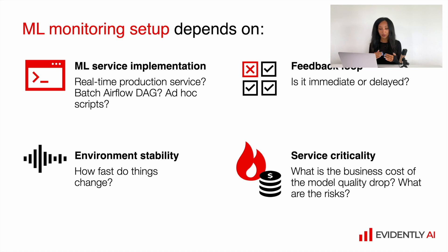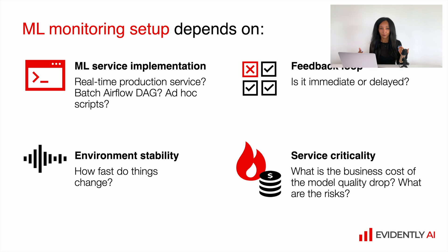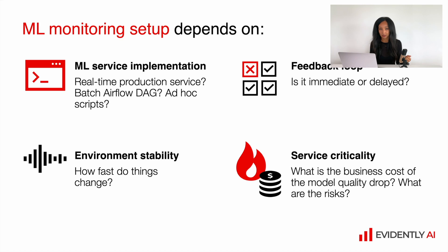Second, feedback loop and environment stability — both factors can influence the cadence of metrics calculations. You might have immediate or delayed feedback, a very stable environment or a very fast-changing one. In this case you might decide whether you want real-time metrics calculations, or prefer to calculate your metrics on a daily, hourly, or weekly basis — whatever suits you most.